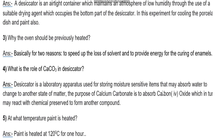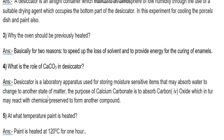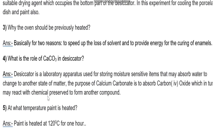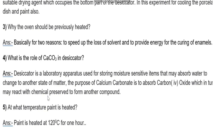What is the role of CaCO₃ (calcium carbonate) in the desiccator? A desiccator is a laboratory apparatus used for storing moisture-sensitive substances. The purpose of calcium carbonate is to absorb carbon dioxide, which may react with chemical preservatives to form another compound. At what temperature is paint heated? Paint is heated at 120°C per hour. This concludes the practical related questions of Basic Science Chemistry. Thank you.